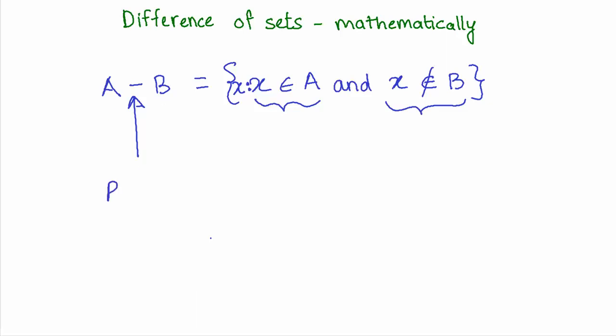So if I were to say what does B minus A mean, in that case the definition would be all those elements X such that those elements belong only to B and they do not belong to A. Here it is the elements that are exclusive to B, whereas in the first case when you do A minus B, it is the elements that are exclusive to the set A.